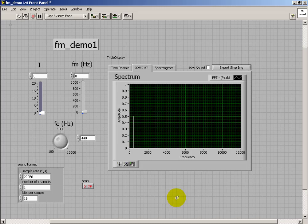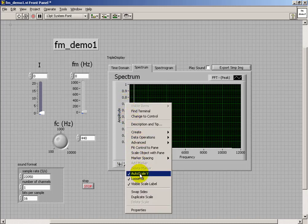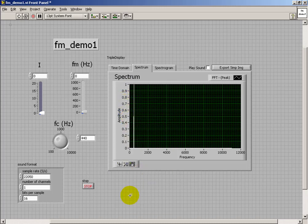So FM demo 1 is a direct implementation of the FM synthesis equation. And I want to explore the spectrum of the signal a bit.